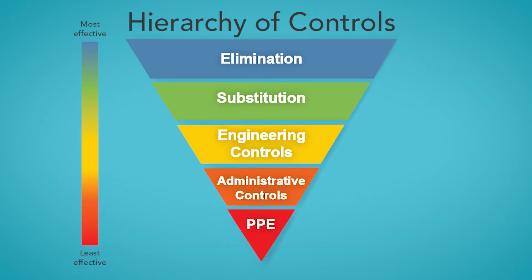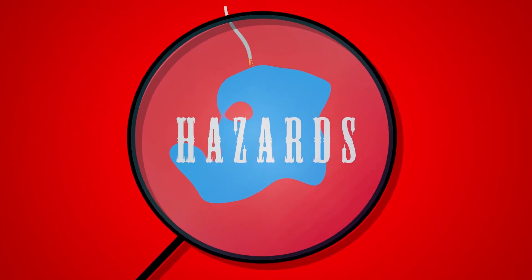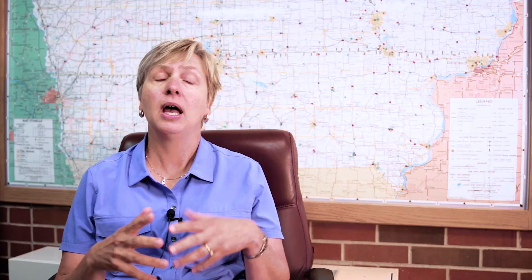When we go to a workplace, one of the things we want to do is to reduce hazards. That involves identifying hazards, recognizing what they are, but then also thinking about ways to mitigate those hazards or to reduce exposure to them.